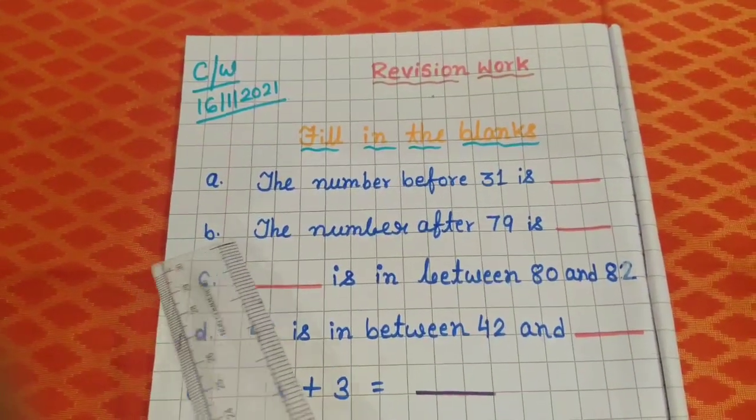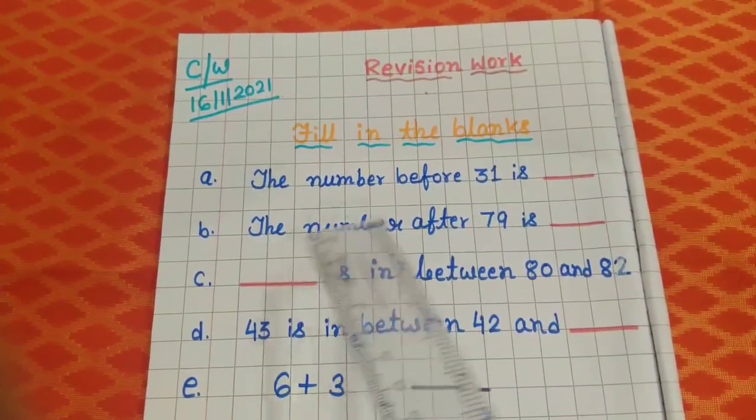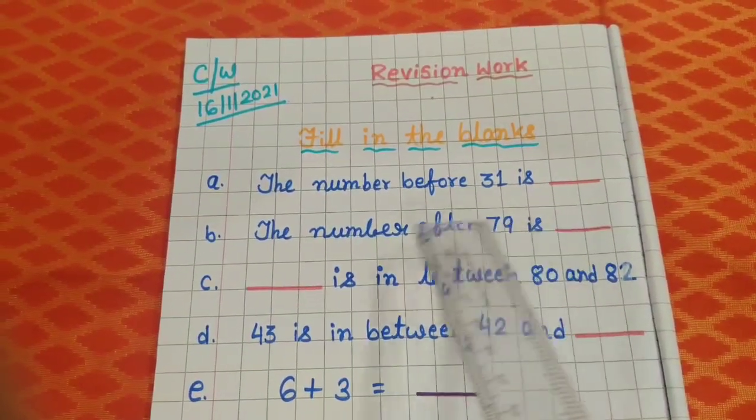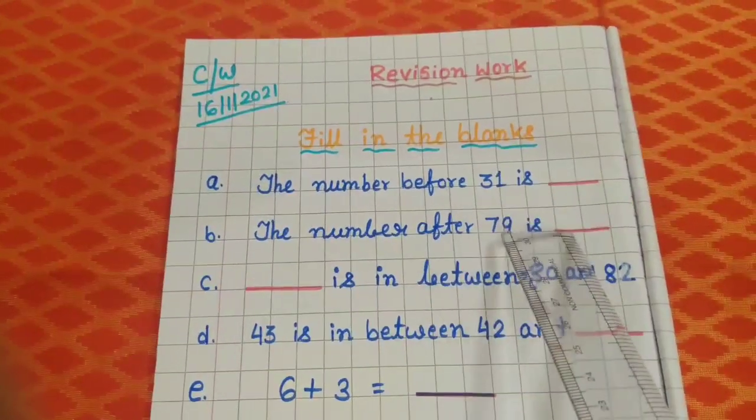Then number B. Here I have written, the number after 79 is. That means what comes after 79, you have to write here.